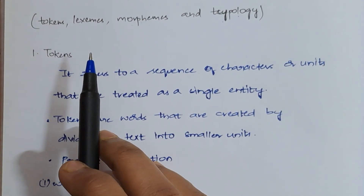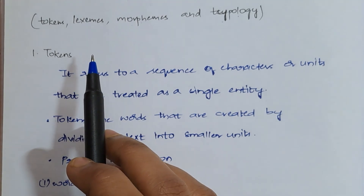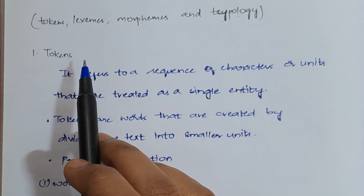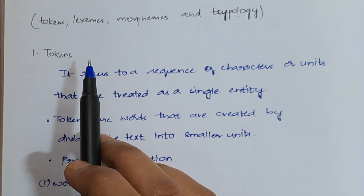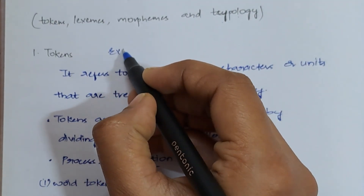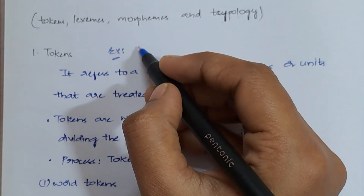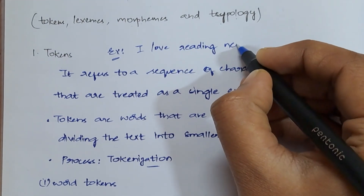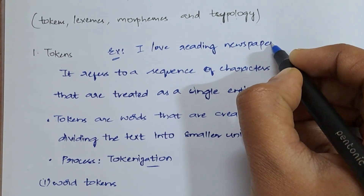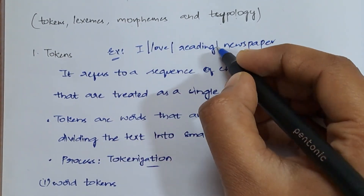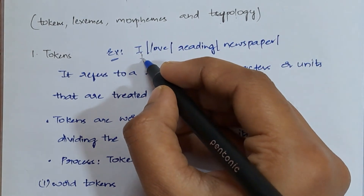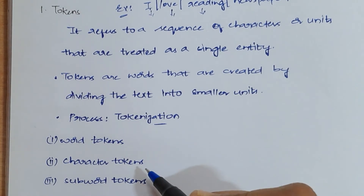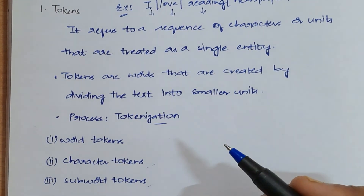First is tokens. If you are given some text and you divide that text into words, sub-words, or a stream of characters, then those obtained results are nothing but tokens. For example, take the sentence 'I love reading newspaper' — dividing this text into words gives us tokens. There are three kinds of tokens: word tokens, character tokens, and subword tokens.